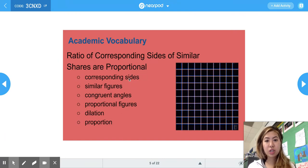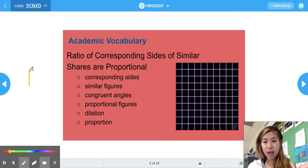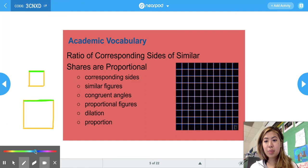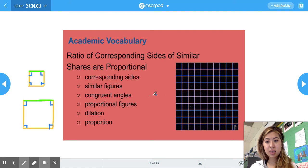Some vocab words are corresponding sides. So that is if we have similar figures. So similar figures are shapes that are the same, but of course different sizes. So corresponding sides would be the same side on the similar figure. So for example, these green lines represent the corresponding sides on this square slash rectangle. And of course, this is an example of similar figures. Similar figures have congruent angles. So all of these angles are the same, even though the side lengths are obviously different because they're different sizes.